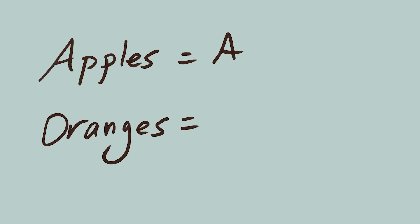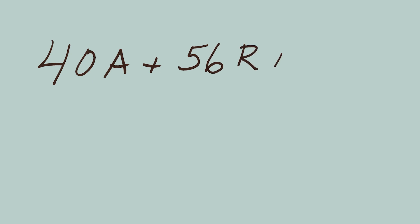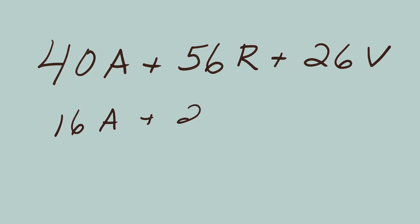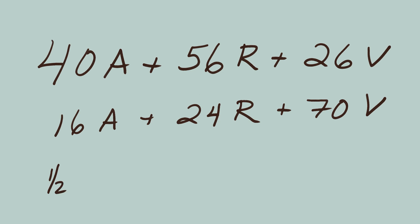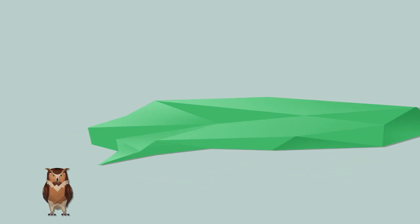So, for instance, if we were to write out how to add up all the kinds of fruit together, it would look like this. From Steve, there's 40A for apple, plus 56R for oranges, plus 26V for avocados. Plus, from Gary, 16A plus 24R plus 70V. Plus, from Janet, one half times the quantity of 3 times 56R, plus 2 times 70V.